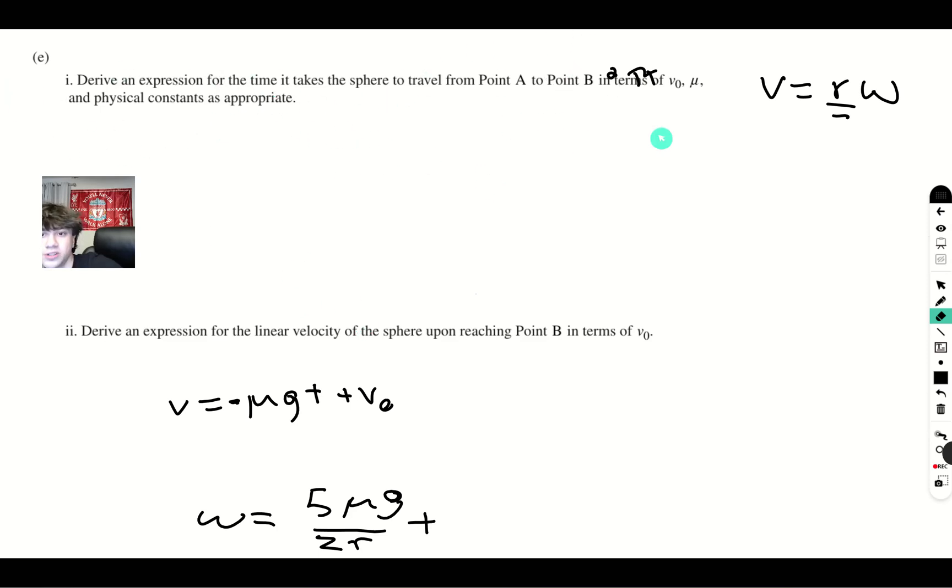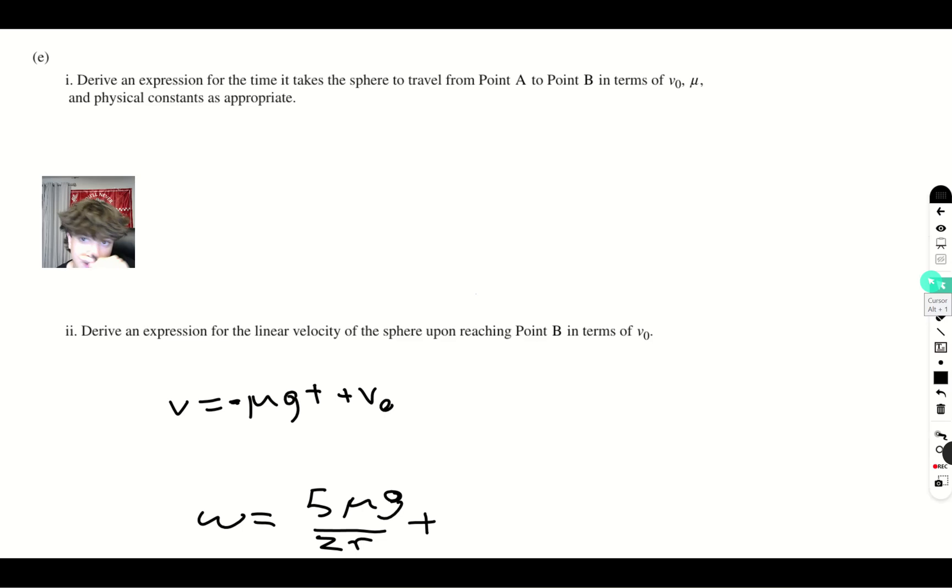All right, the next part wants us to find an expression for the time t it takes for the sphere to travel from point A to point B. And we know that the significant thing about point B is that that's when the ball starts rolling without slipping. And we know that when an object begins rolling without slipping, its velocity is equal to its rotational speed. So we can just set these equations together, equal to each other. V would be equal to r omega.